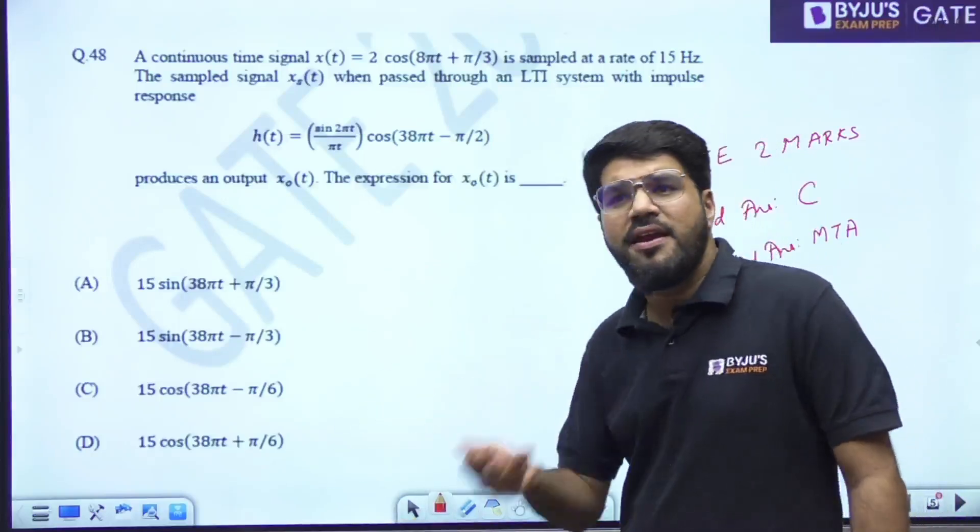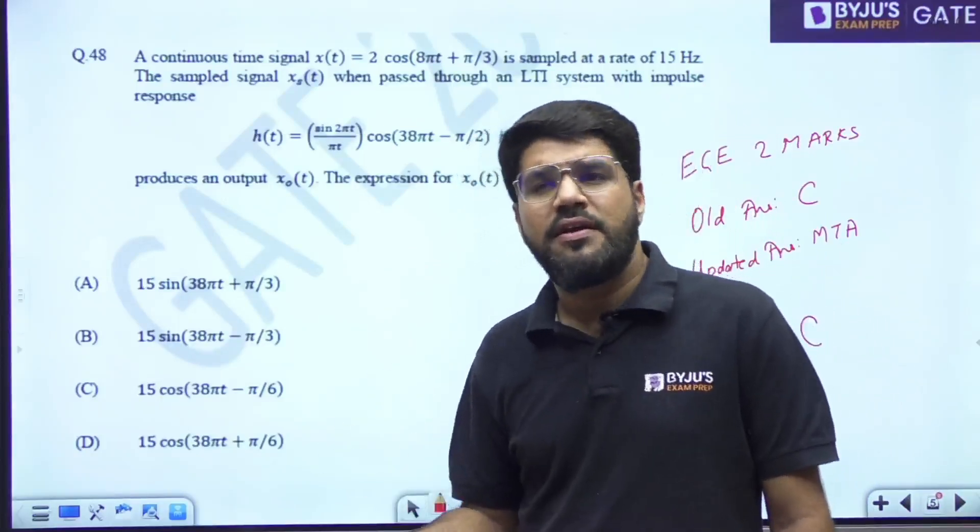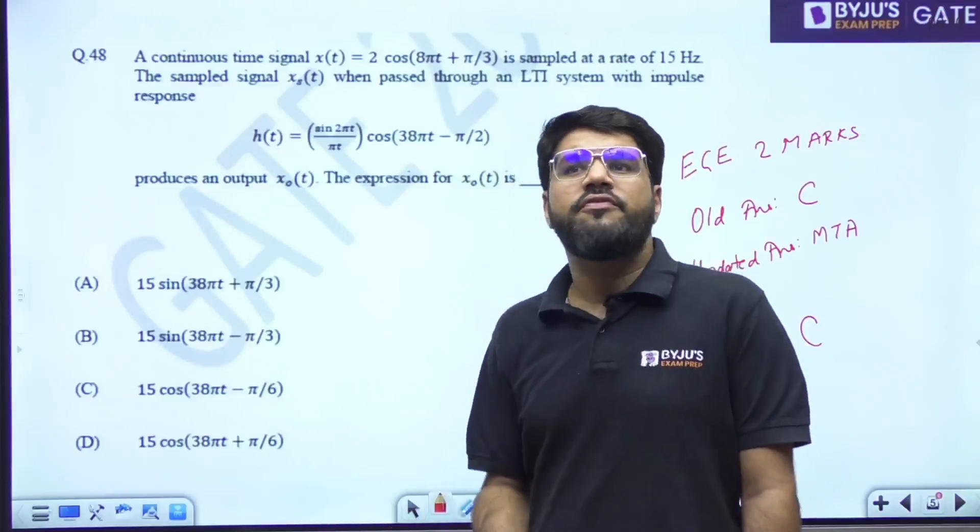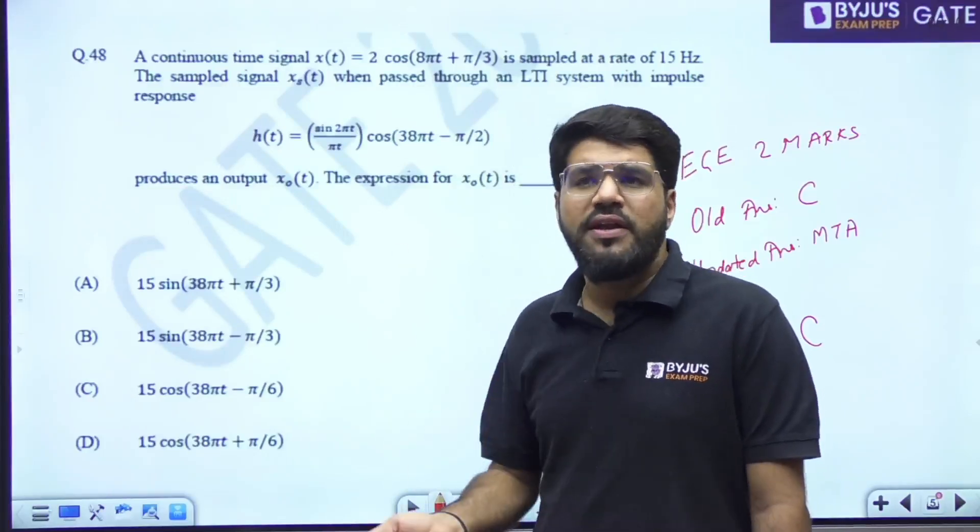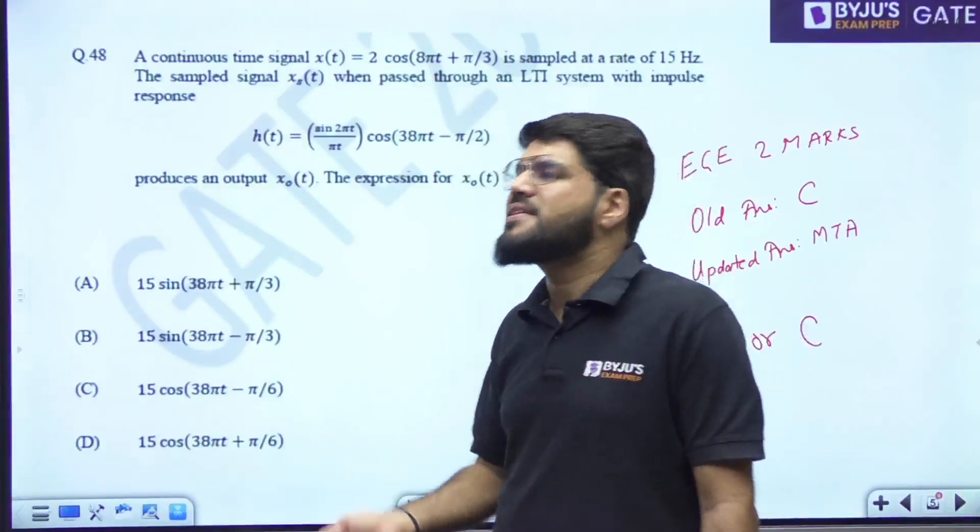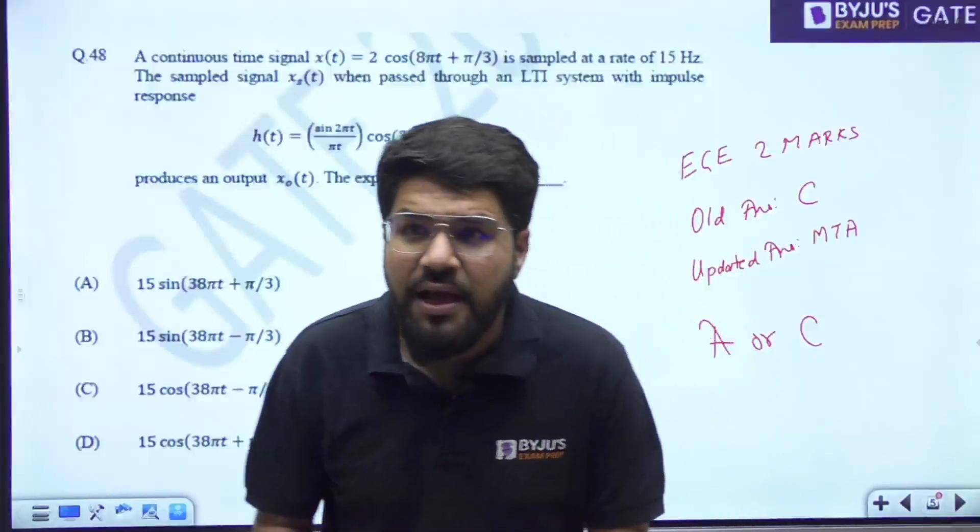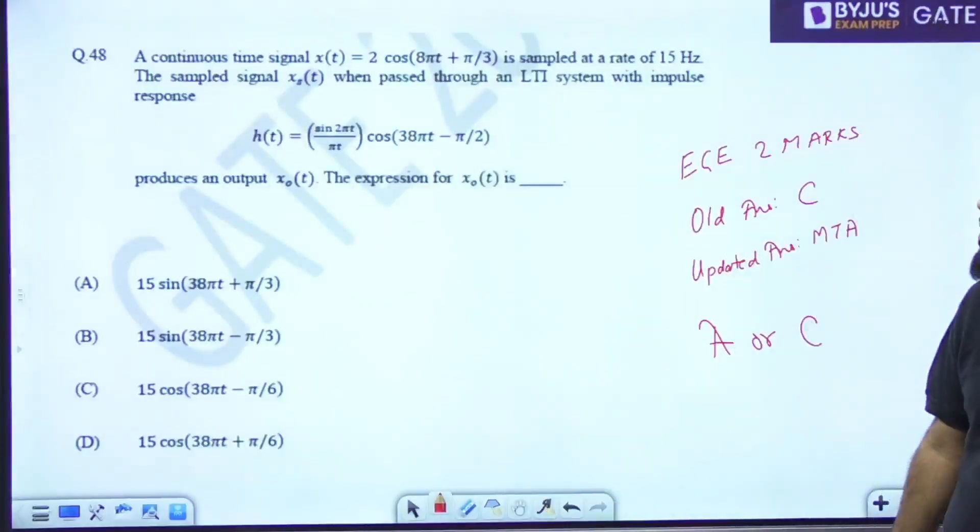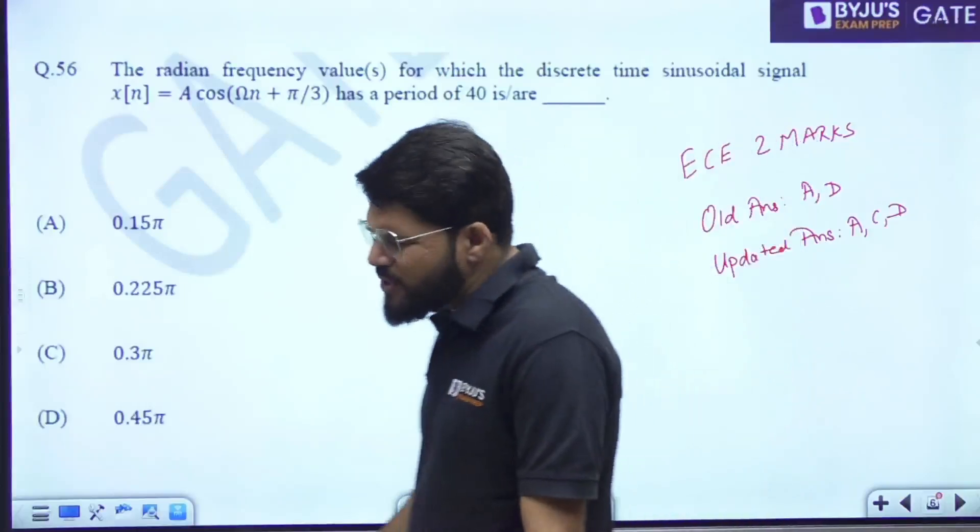In MCQ also, A marked or C marked, give marks to both. Otherwise, leave it. Those who have marked D or B here, they also get free marks. Those who have not even attempted, they get free marks. What exactly is happening, I really don't know. I know students will be upset, and I am also personally upset with such things coming up.